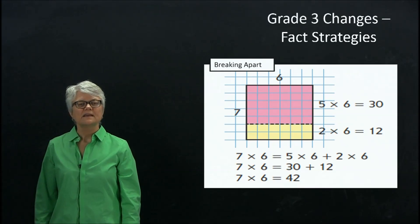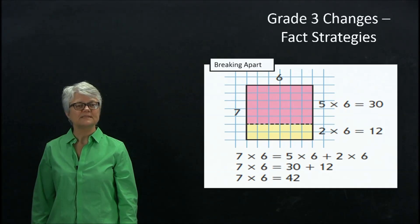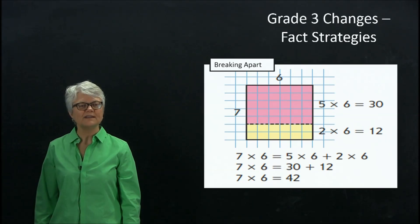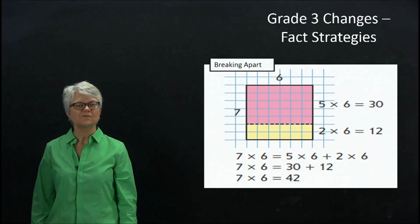So in this case, 7 has been broken into 5 and 2. And children multiply 5 times 6 and get 30, and 2 times 6 and get 12. The sum of those two products equals the product of 7 times 6, which is 42.